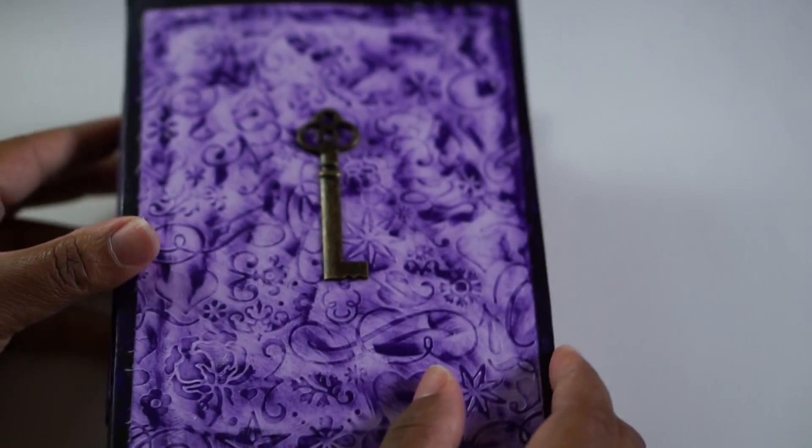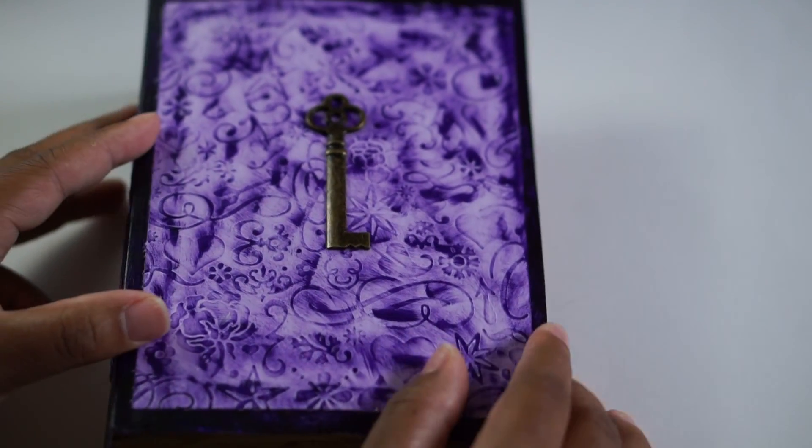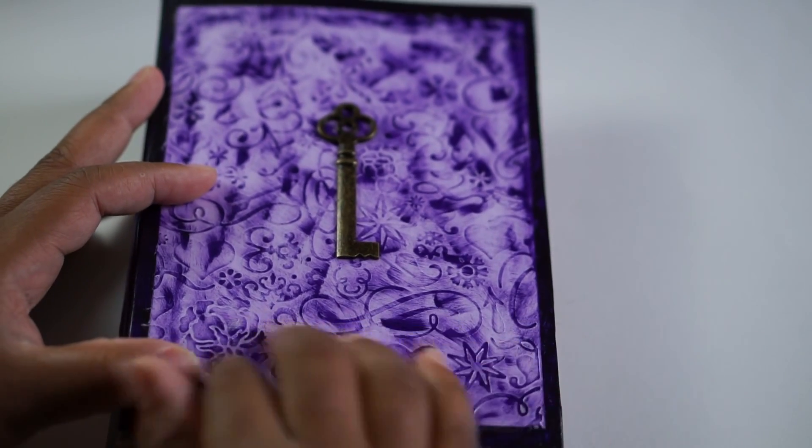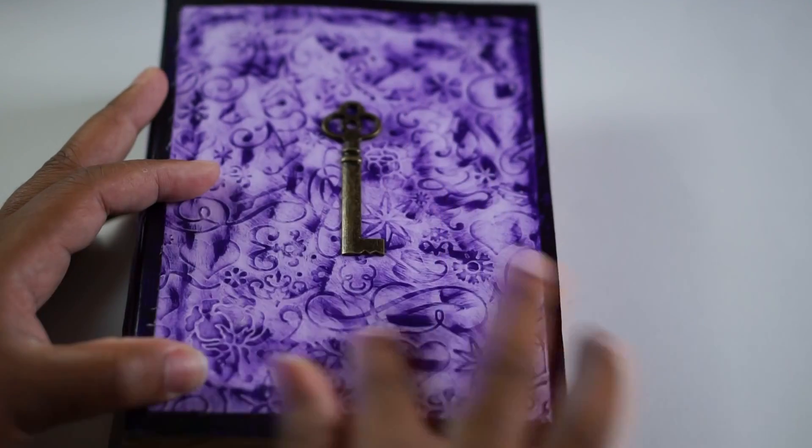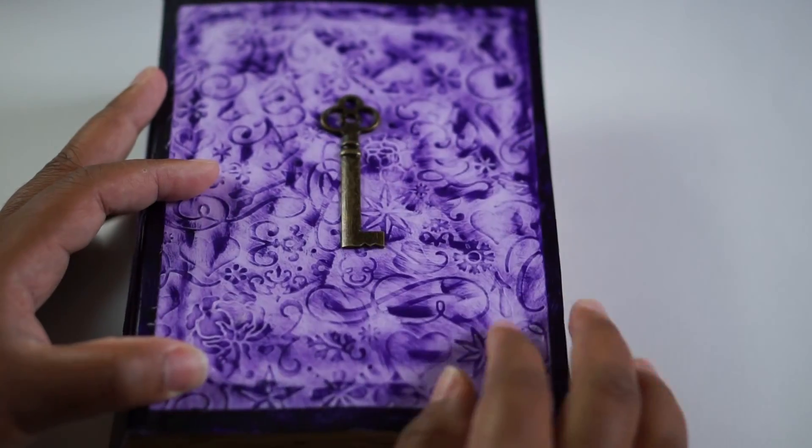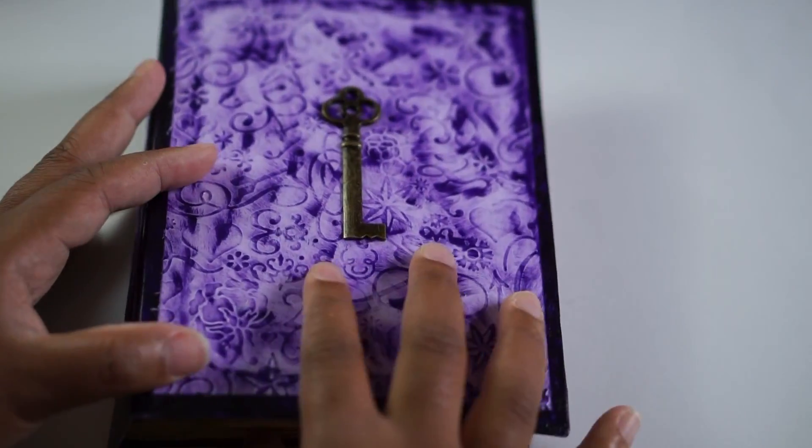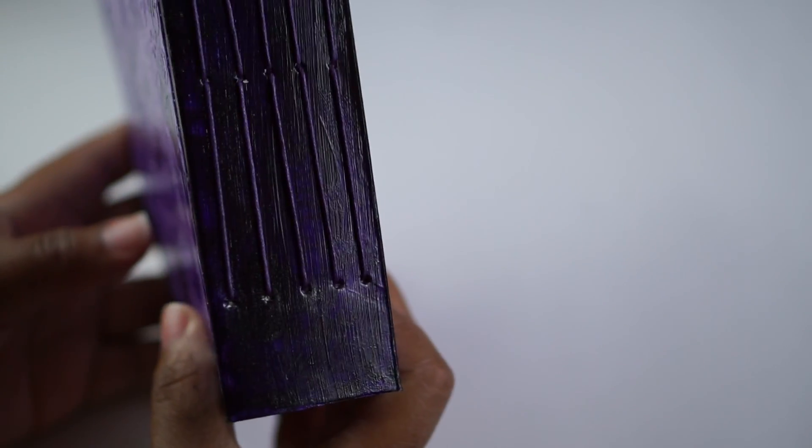So then I also have this purple one. There's a key here. I embossed with this kind of pattern. It's raised and then I painted over it. And again, it's hand bound as well.